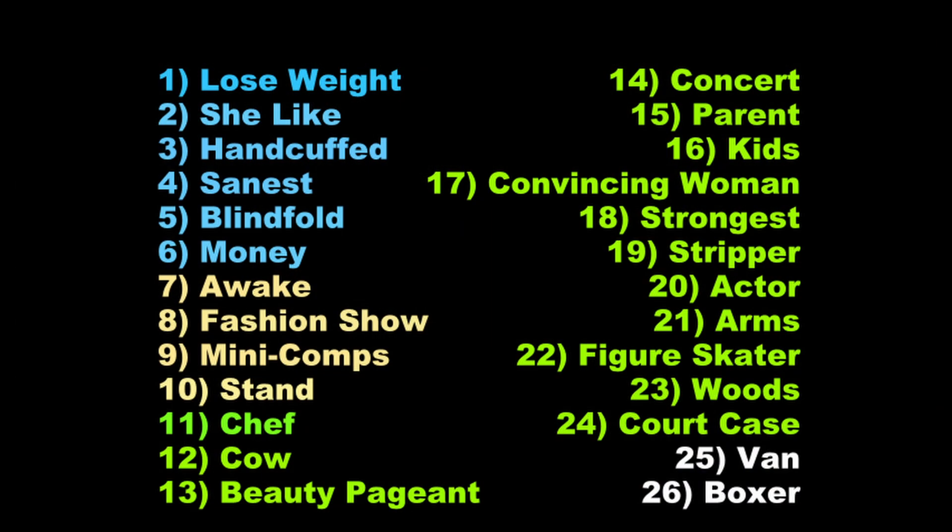So the order I settled on for the summer cycle is: Chef, Cow, Beauty Pageant, Concert, Parent, Kids, Convincing Woman, Strongest, Stripper, Actor, Arms, Figure Skater, Woods, and Court Case.